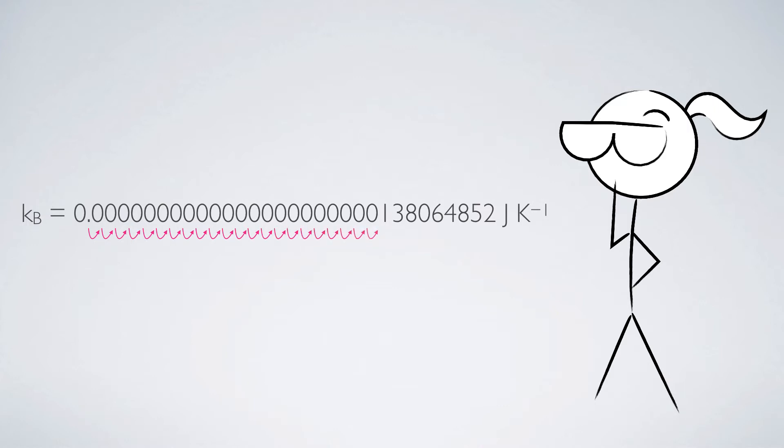And what I can do is rewrite the answer here as 1.38 times 10 to the minus 23. It's minus 23 because I'm moving my decimal place to the right. Clearly, the second way of writing the Boltzmann constant is significantly easier to understand than the first way. And usually, when we see the Boltzmann constant, it's written as 1.38 times 10 to the minus 23 joules per Kelvin.